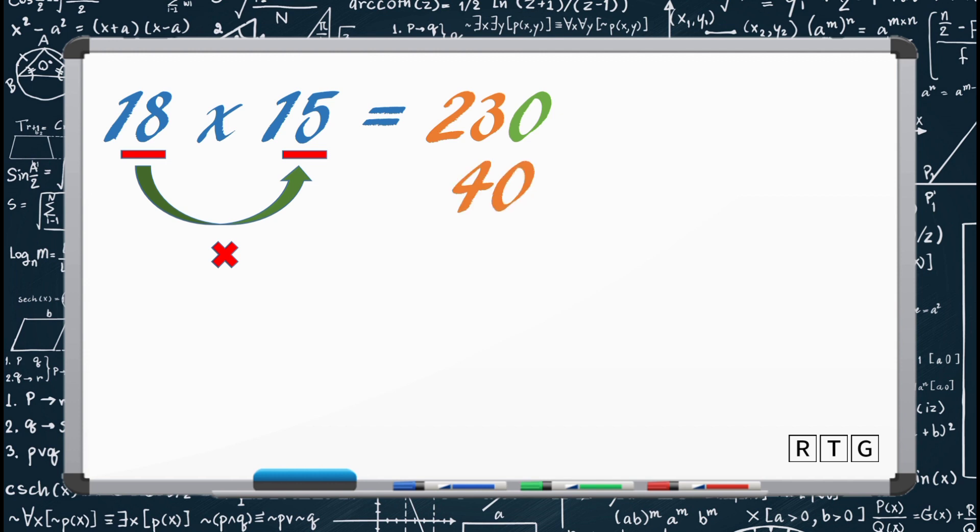For the last step, let us also add 40 to 230. 230 plus 40 equals 270. And that will be our answer. 18 times 15 equals 270.